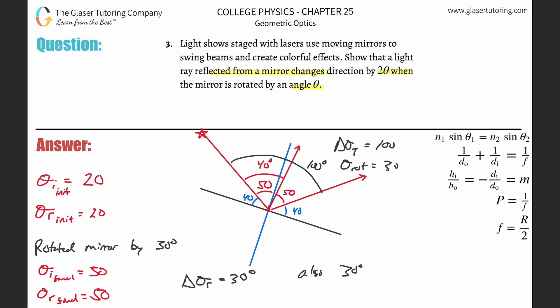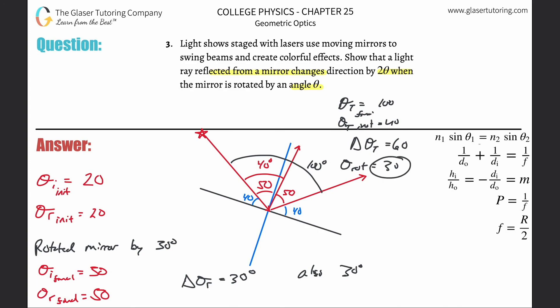The total value changed from 40 to 100, so the total change is 60 degrees. The mirror was rotated by 30 degrees, and 30 times two is 60. This is exactly what we're trying to prove: when the mirror rotates by 30 degrees, the total change in the angle of reflection changes by twice that amount — 60 degrees. We've proved it here without letters and formulas.